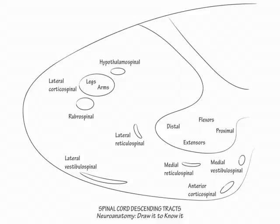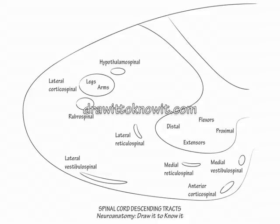In polio syndrome and spinal muscular atrophy, the anterior horn cells degenerate, causing flaccid weakness. In Kennedy syndrome, a form of spinal muscular atrophy, the dorsal root ganglia are affected in addition to the motor neurons. This concludes our drawing of the descending tracts of the spinal cord.